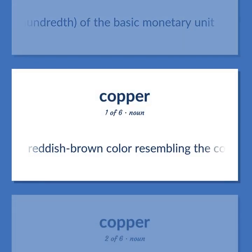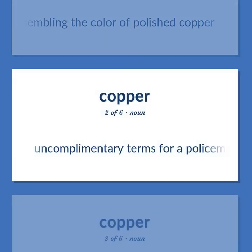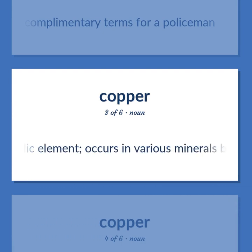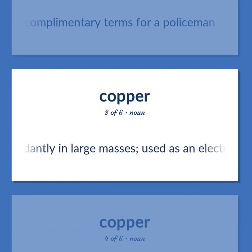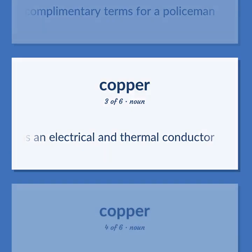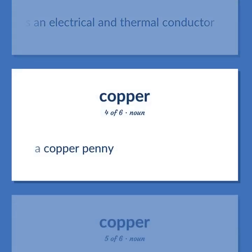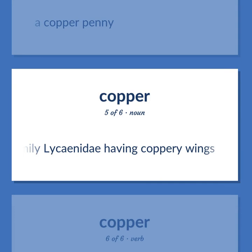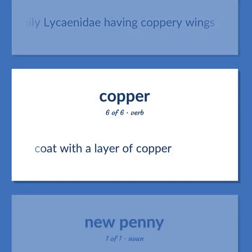A reddish-brown color resembling the color of polished copper. An uncomplimentary term for a policeman. A ductile, malleable, reddish-brown, corrosion-resistant, diamagnetic metallic element — occurs in various minerals but is the only metal that occurs abundantly in large masses; used as an electrical and thermal conductor. A copper penny. Any of various small butterflies of the family Lysenidae having coppery wings. Coat with a layer of copper.